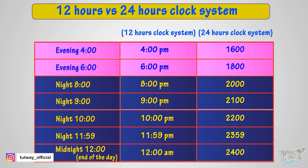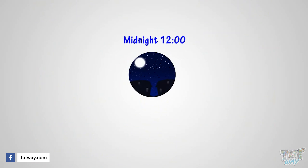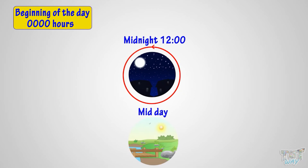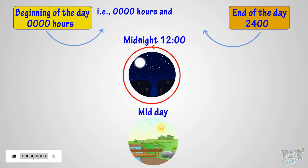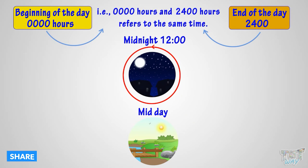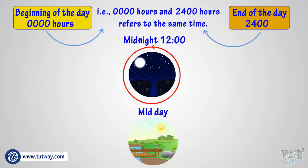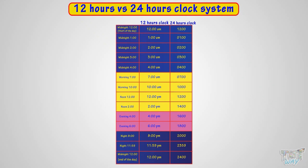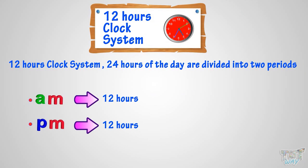So kids, the 24-hour day starts at midnight 12, which is called zero hour in the 24-hour clock, and ends at 2400, which is the zero hour of the next day. That is, 0000 and 2400 refer to the same point in time — zero hours is the beginning of the day and 2400 is the end of one day and the beginning of another. Today we learned the two types of clock systems — 12-hour and 24-hour — and the relation between them.